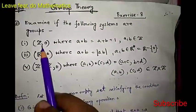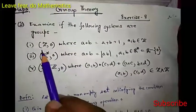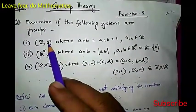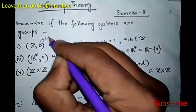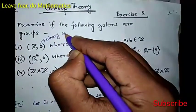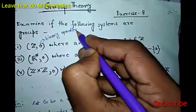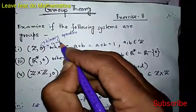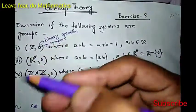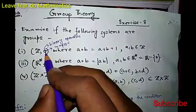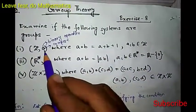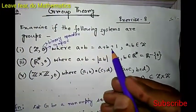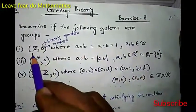The first system is given as (G, ∘). This notation is the notation of a binary operation — basically a binary operation or composition. Whenever this notation comes, we will read it as 'compose'. So Z compose, where A ∘ B equals A plus B plus 1, with A, B belonging to Z. We have to check if this mathematical system is a group or not.